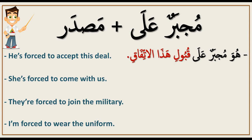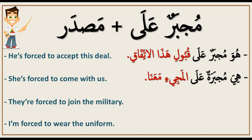Or: 'She's forced to come with us.' So 'she's forced' — هي مجبرة على. Then 'to come with us' — المجيء معنا. Full sentence: هي مجبرة على المجيء معنا.